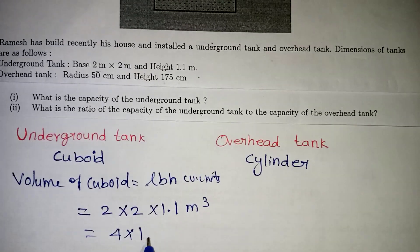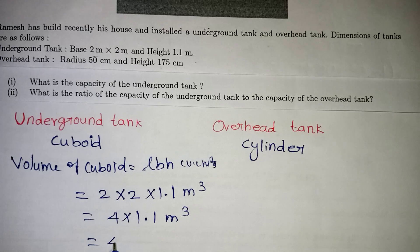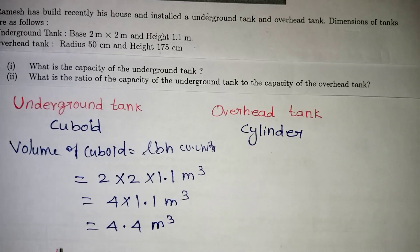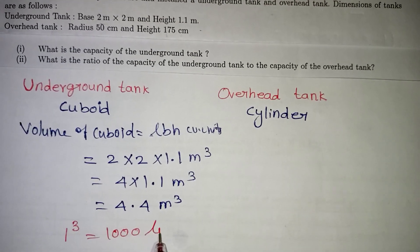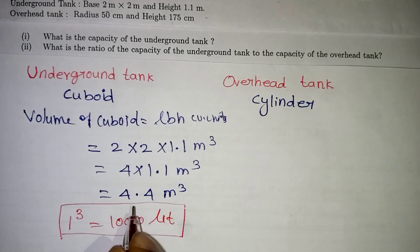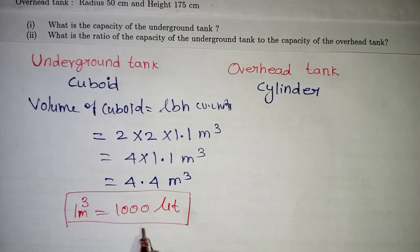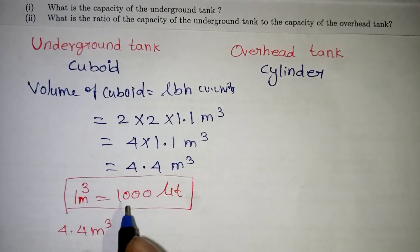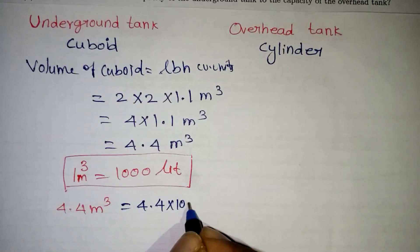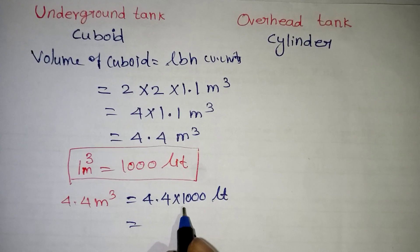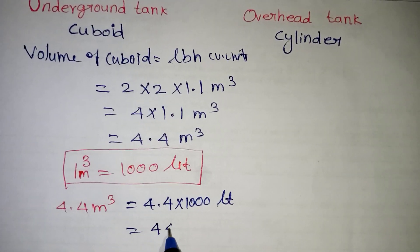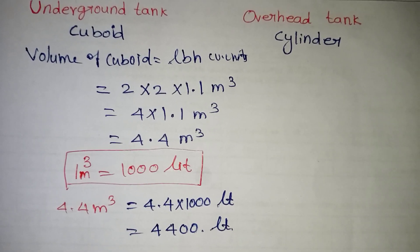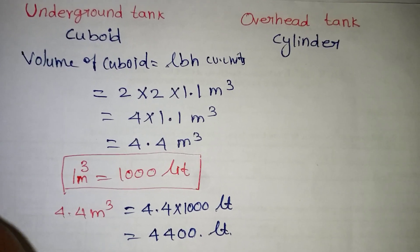So 2 × 2 = 4, and 4 × 1.1 = 4.4 cubic metres. This is the capacity of the underground tank. Now, 1 cubic metre equals 1000 litres. So 4.4 m³ × 1000 = 4400 litres. The capacity of the underground tank is 4400 litres.